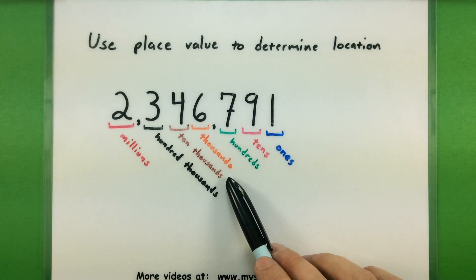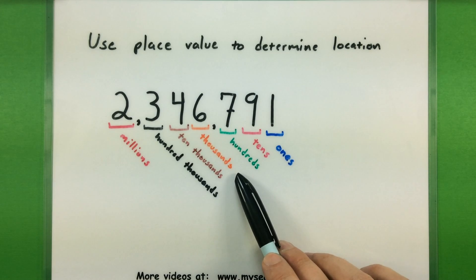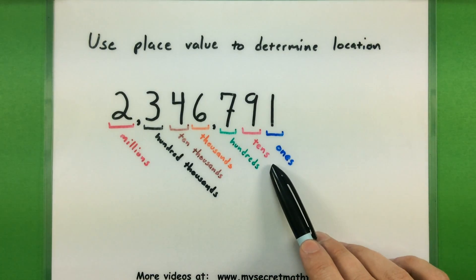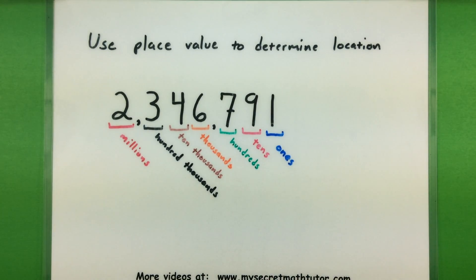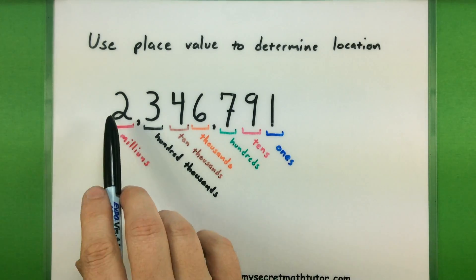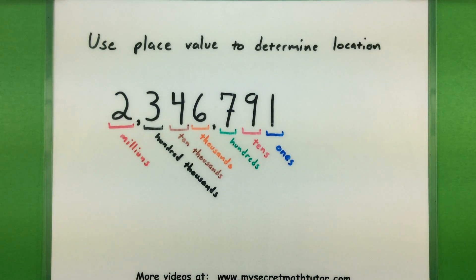Three is in the hundred thousands, four is in ten thousands, six is in the thousands, seven is in the hundreds, nine is in the tens, and one is in the ones place.